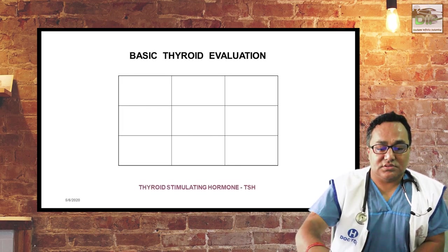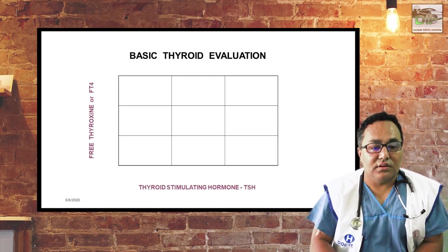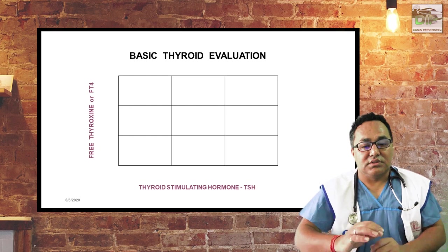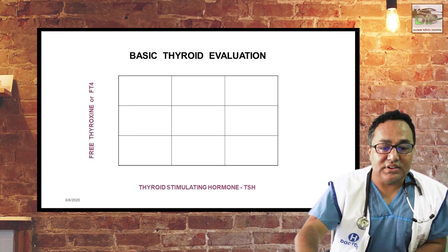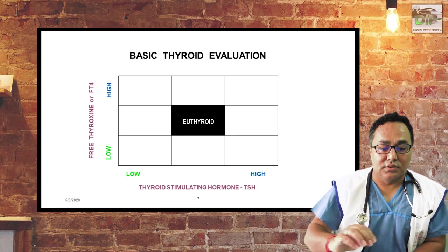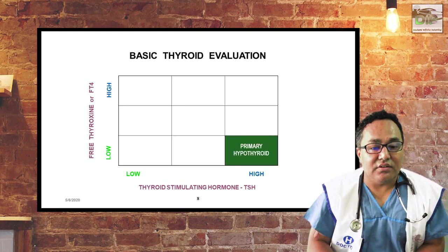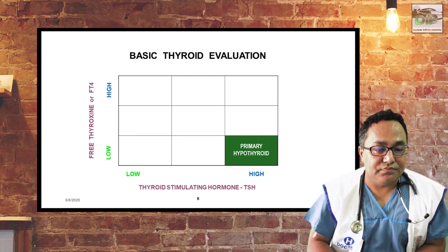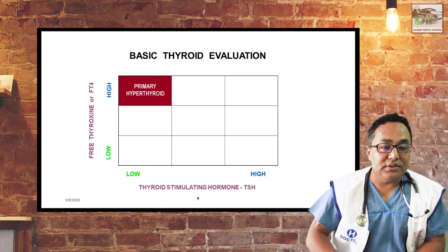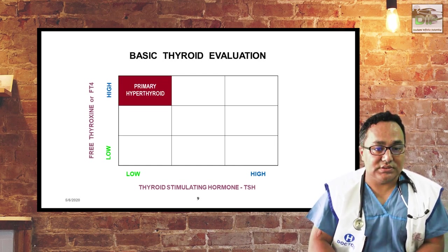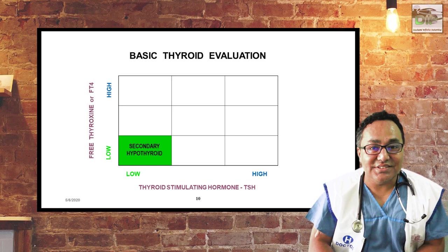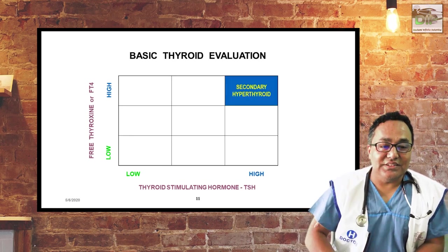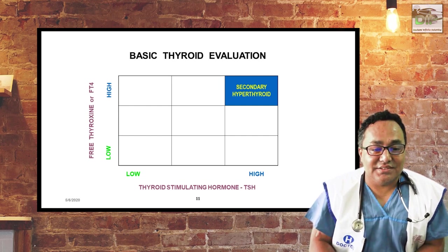In this nine square table, the x-axis shows TSH and the y-axis shows FT4. Whenever TSH is normal and FT4 or T3 is normal, it is euthyroid. Whenever there is high TSH and low T4, it is primary hypothyroidism. Whenever T4 is high and TSH is low, it is primary hyperthyroidism. Whenever both T4 and TSH are low, this is secondary hypothyroidism.